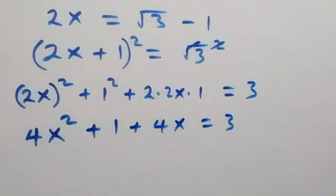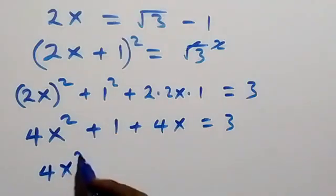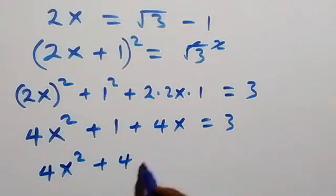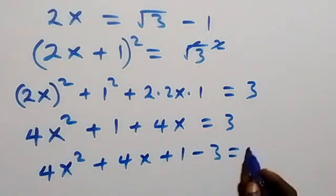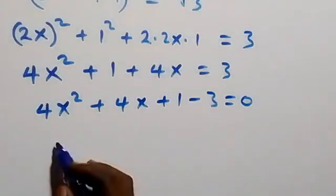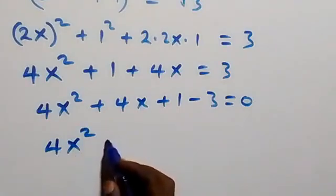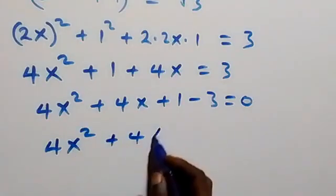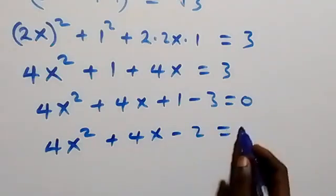Let's bring 3 to the left side so that we have 4x squared plus 4x plus 1 minus 3 equals to 0. That is 4x squared plus 4x minus 2 equals to 0.